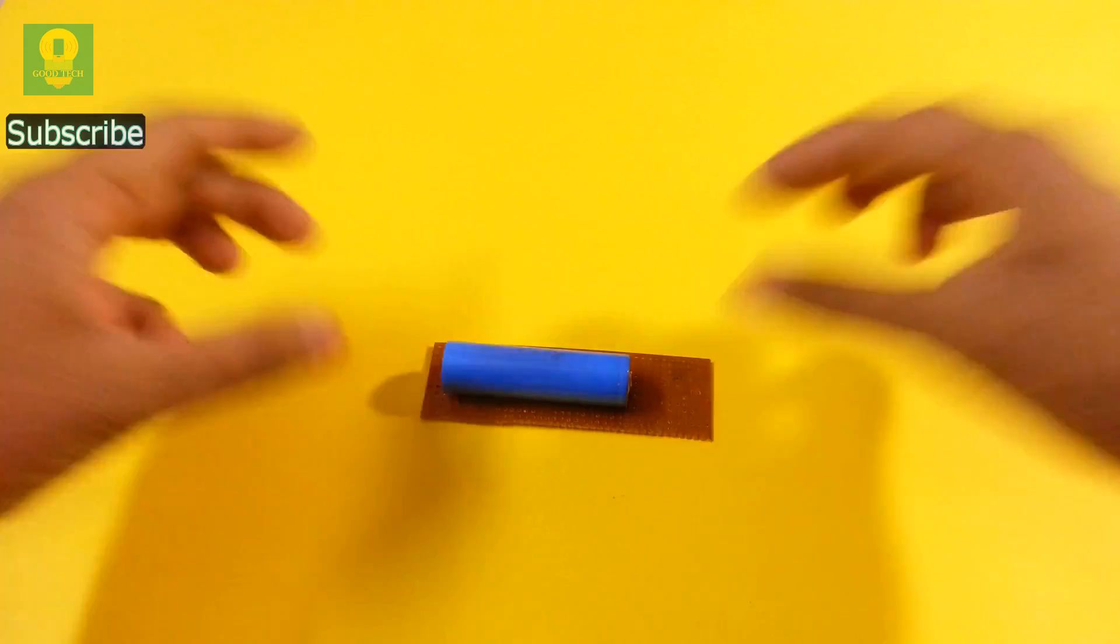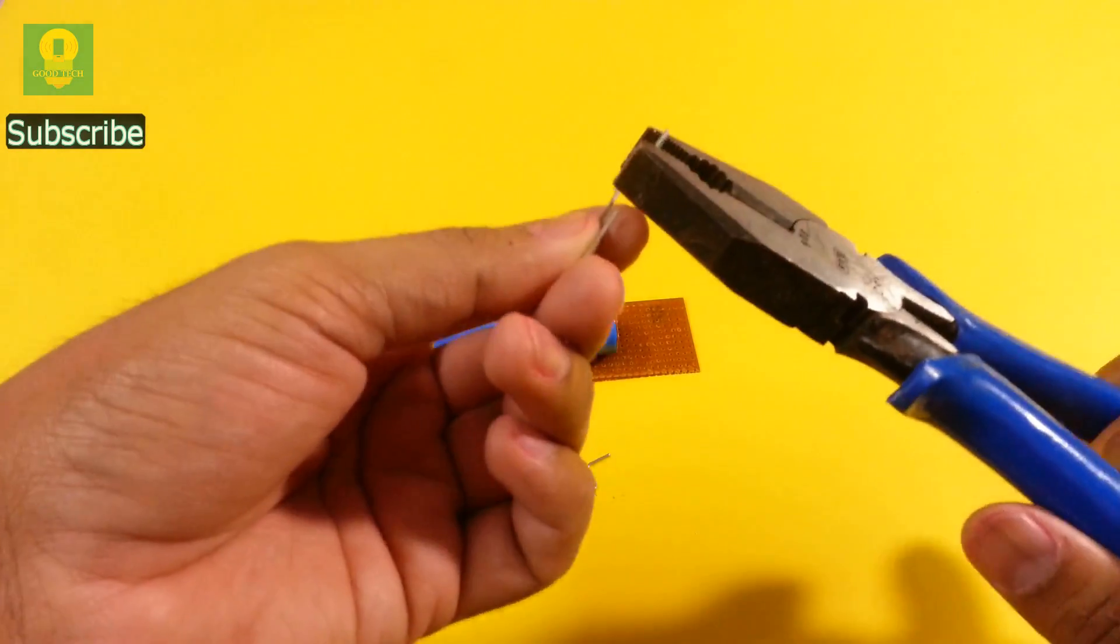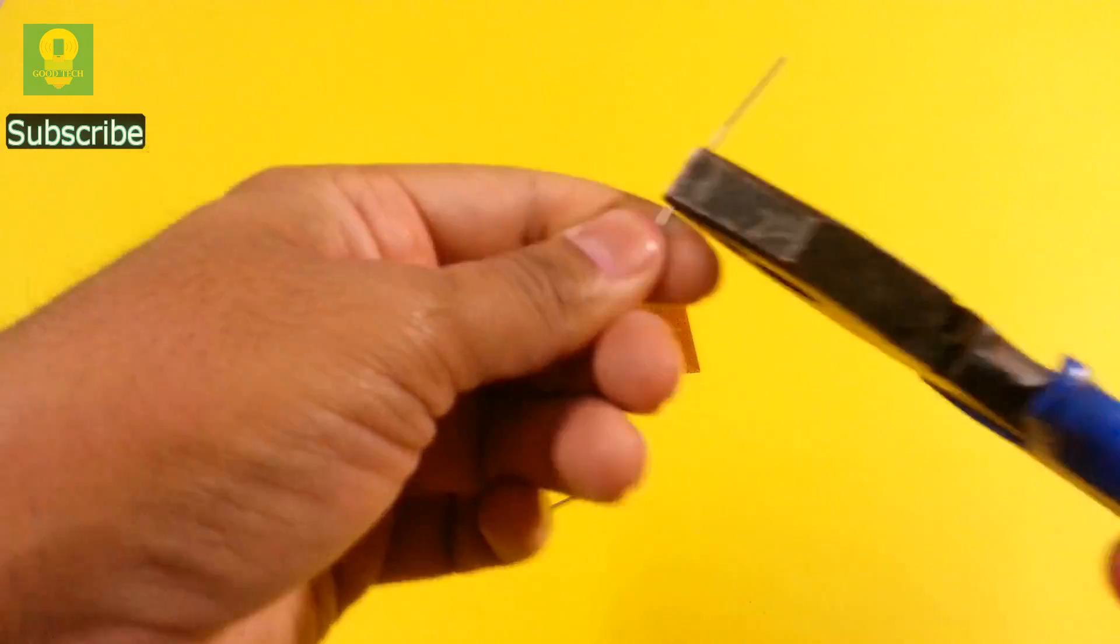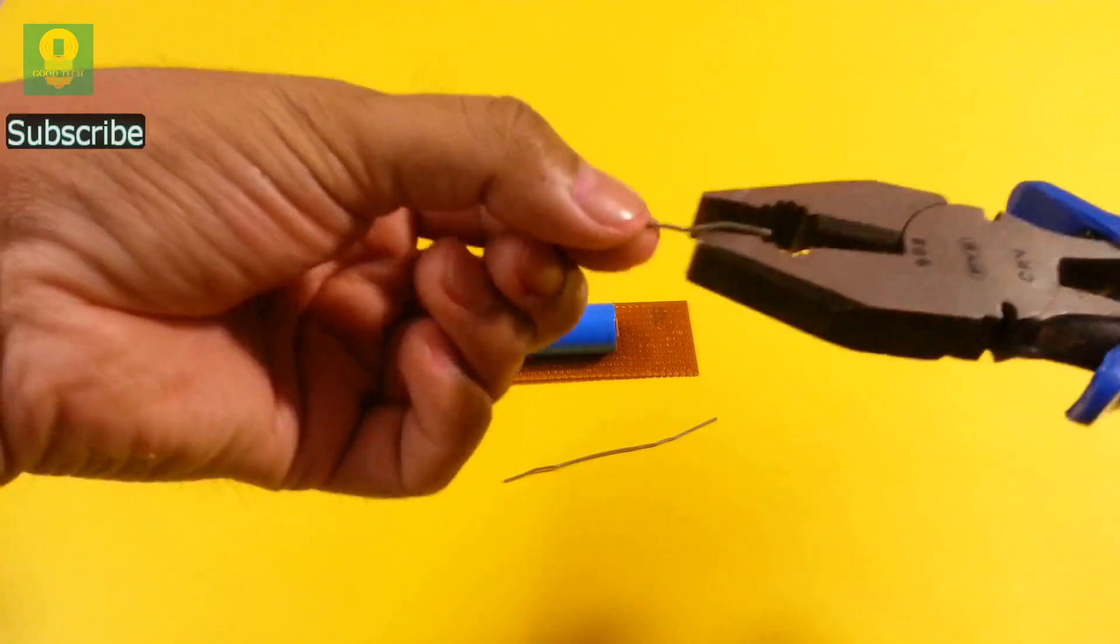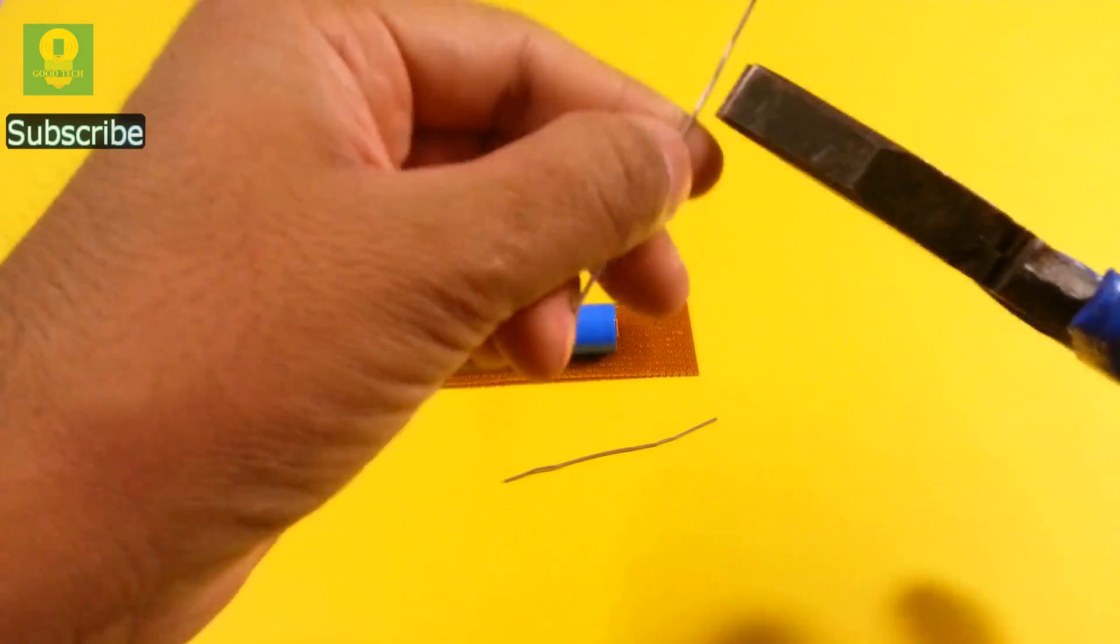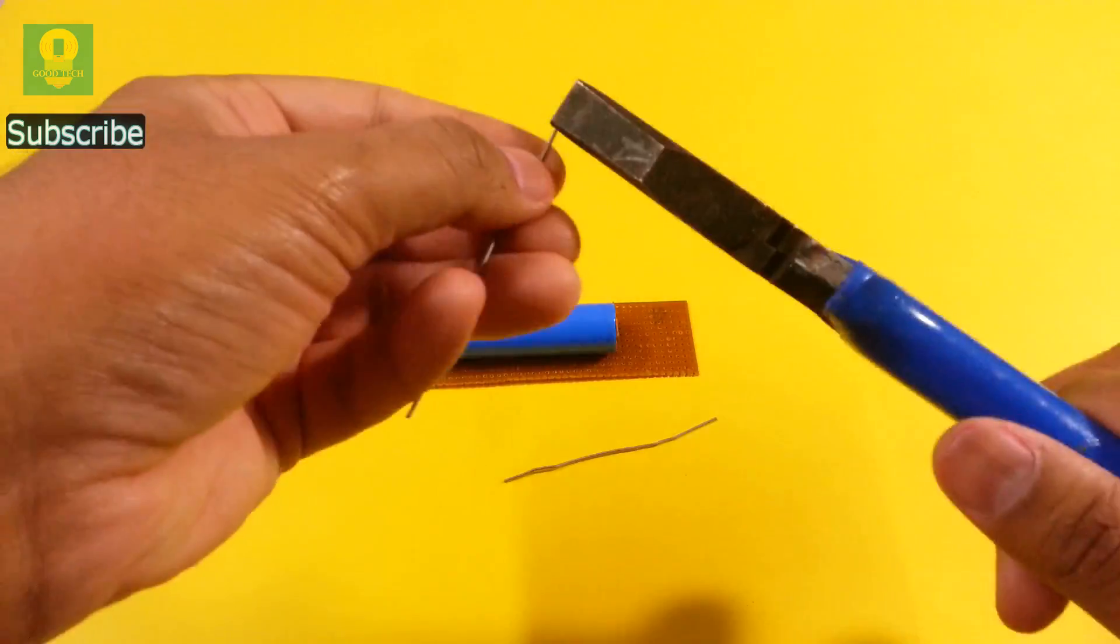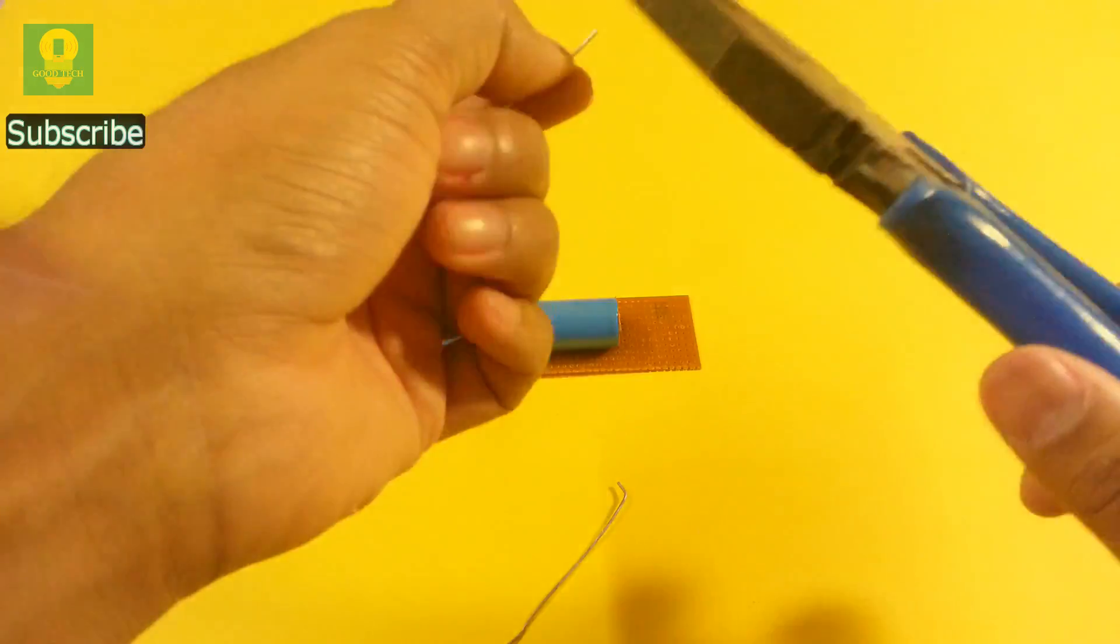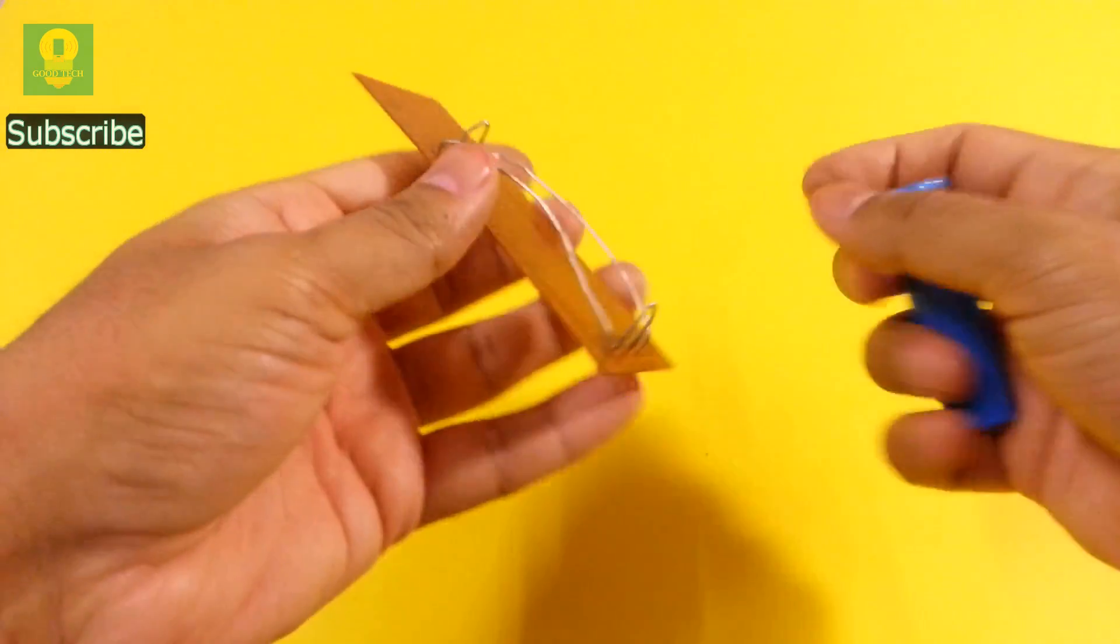then it is time to lock the sides. Take the remaining clips and make them straight using pliers. Bend the edges slightly. Insert the clips at the sides and solder them well.